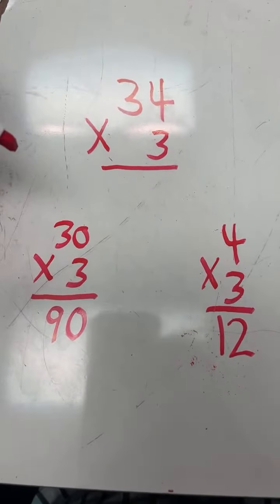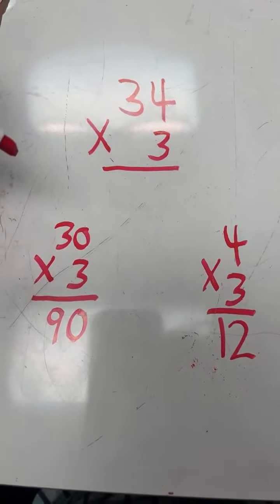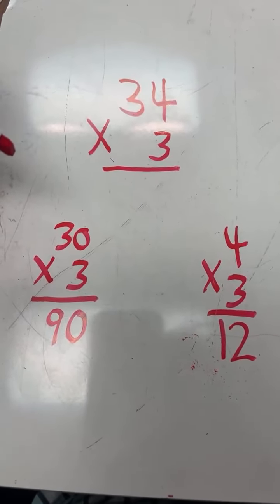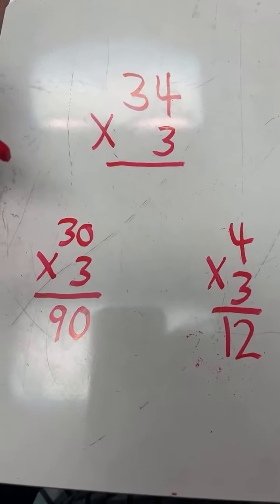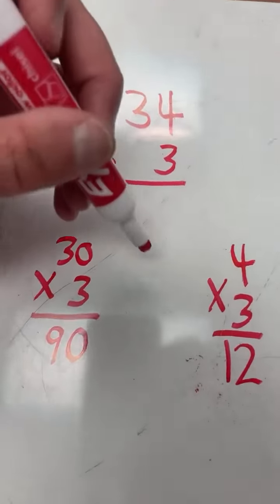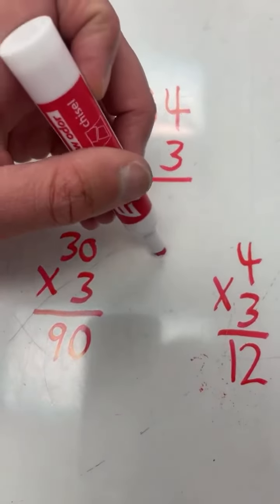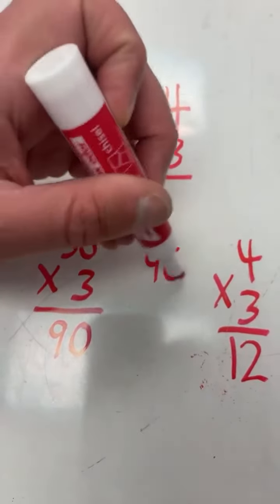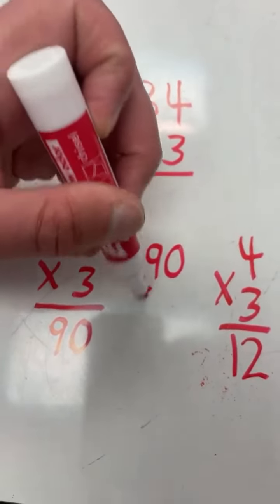4 times 3 equals 12, and 30 times 3 equals 90. Now to find the answer to 34 times 3, we have to add 90 plus 12.